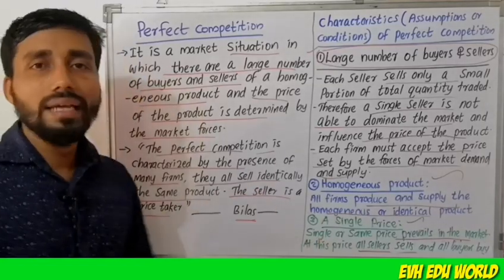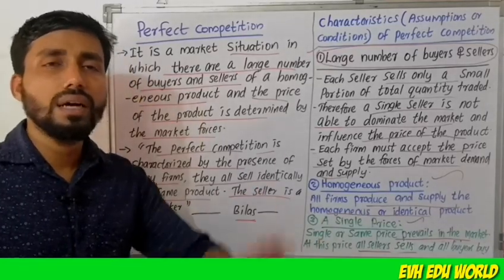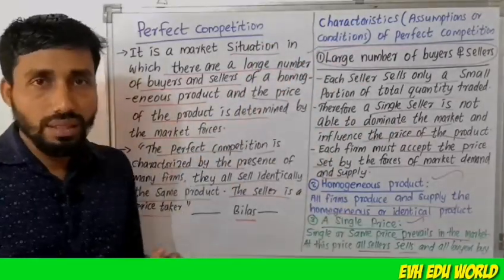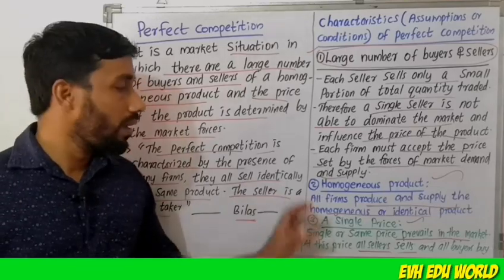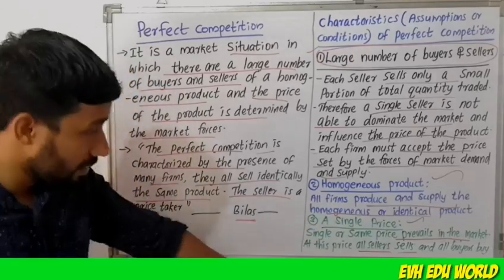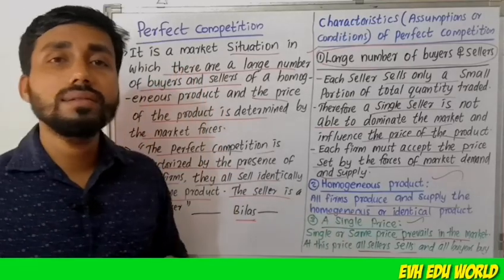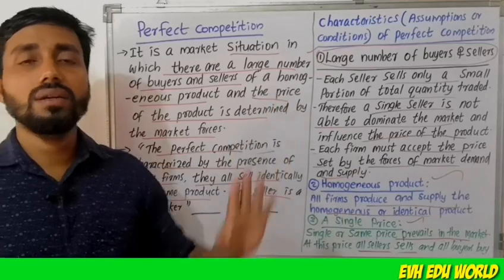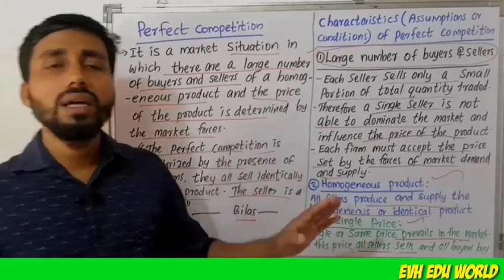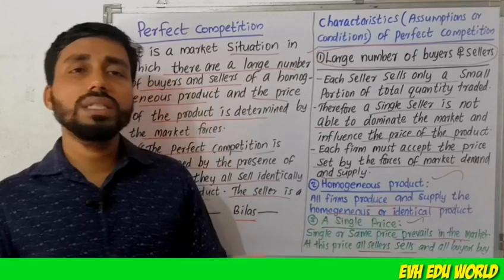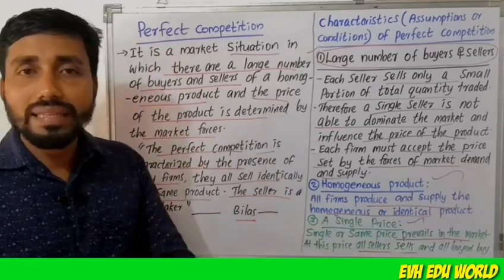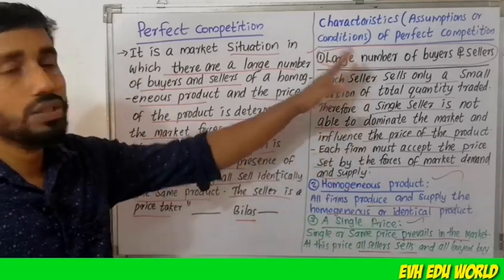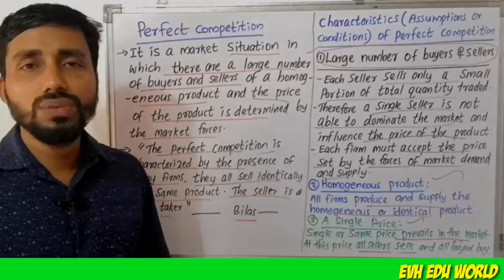The third feature is a single price. A single or same price prevails in the market. At this price, all sellers sell and all buyers buy. Every buyer and every seller transacts at the same price in a perfect competition market.